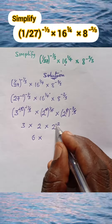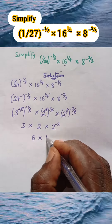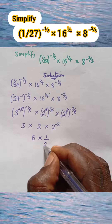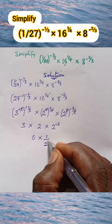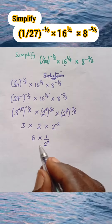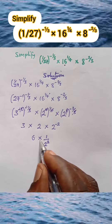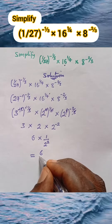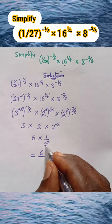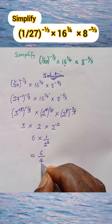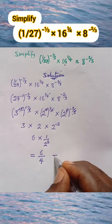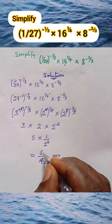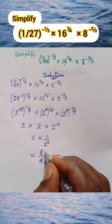This negative sign simply means 1 all over, and we are left with 2 raised to the power of 2. So 6 multiplied by 1 gives us 6 all over 2 raised to the power of 2, which is 4. And this gives us 6 over 4.